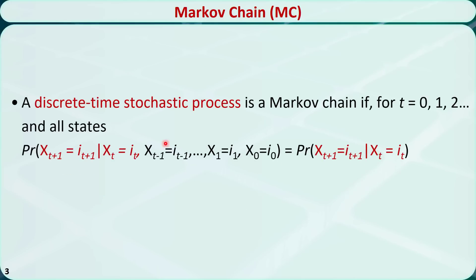A discrete time stochastic process is a Markov chain if for t equal to 0, 1, 2, and so on, the states have the following relation. This is an equation. The left-hand side is a conditional probability.